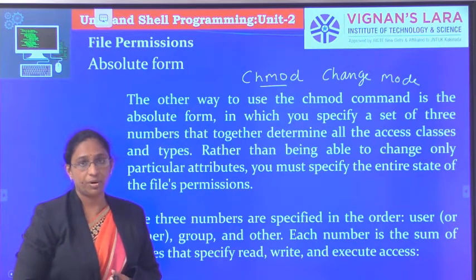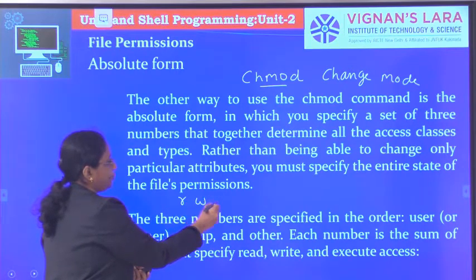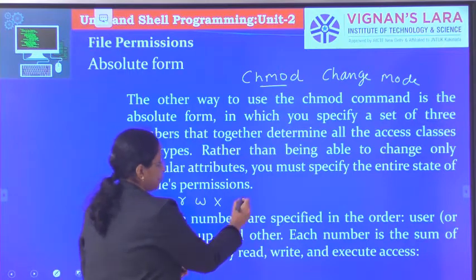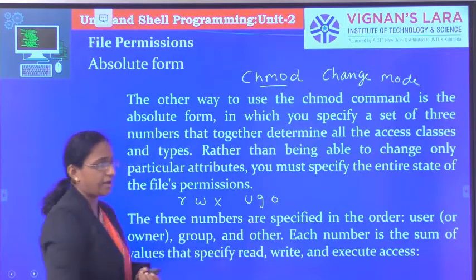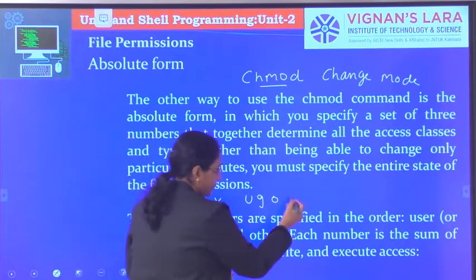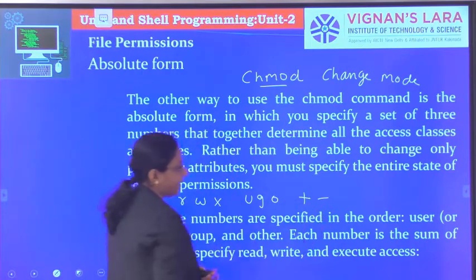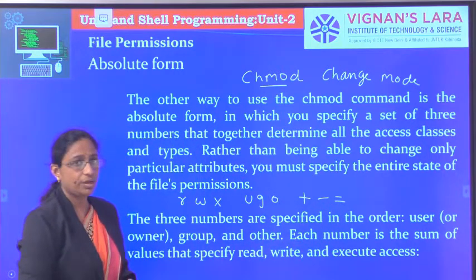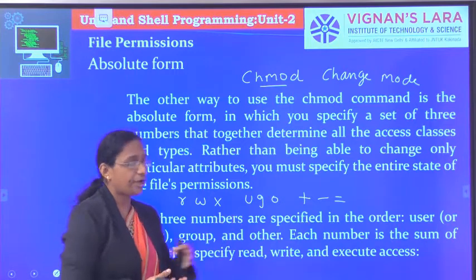In the previous class we have seen the symbolic mode, where symbolic mode takes attributes like read, write, execute for giving permissions. For users you say U, for group you say G, and for others you say O. For operations: plus to add a permission, minus to remove a permission, and equal to for giving exact access.